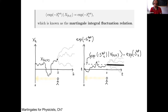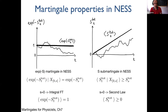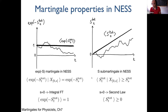This martingale condition for e^(−S) is a central result. Since any convex function of a martingale is a sub-martingale, and −log is convex, −log(e^(−S)) = S is a sub-martingale. This generalizes the integral fluctuation theorem: set S to zero, average over x₀, and you recover the integral fluctuation theorem. The second law also follows from the sub-martingale by setting s equal to zero.